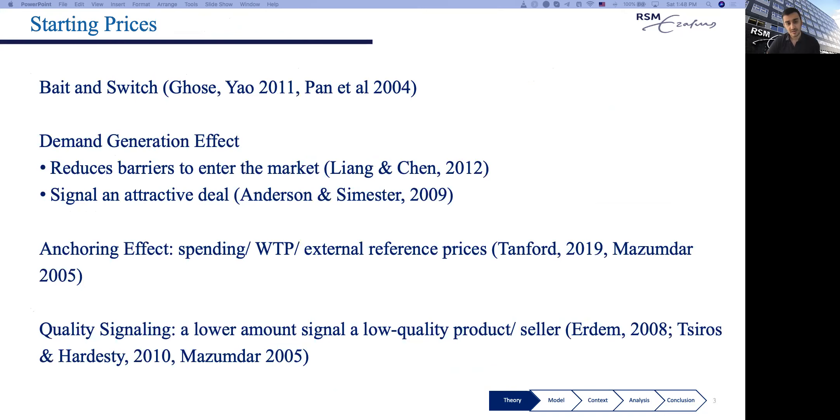Now concerning starting prices, these prices usually represent a range of prices and are generally used to communicate a minimum for the price of the worst available alternative. There is substantial literature around these price cues. Perhaps the most important one is the baiting and switching strategy where sellers advertise low starting prices but do not honor that in the end, hoping to generate demand, which is cited under reducing barriers to enter a market, especially in auctions, and signaling an attractive deal.